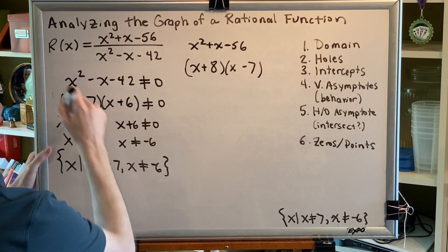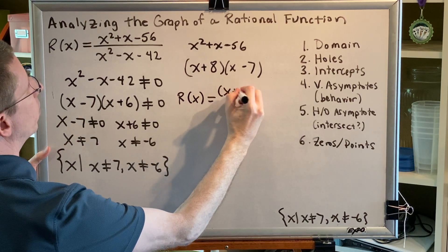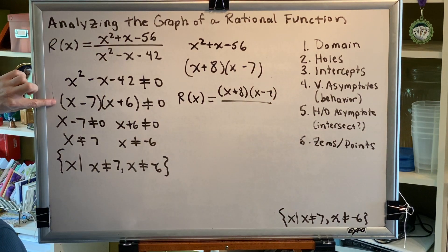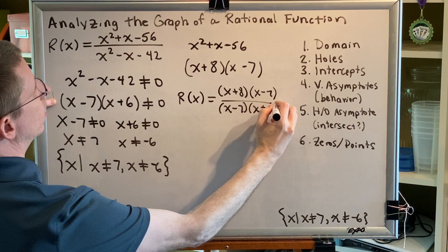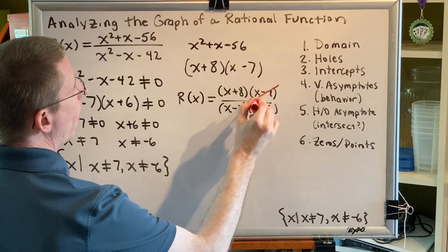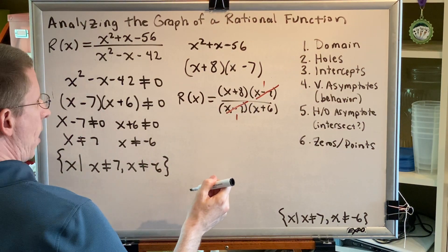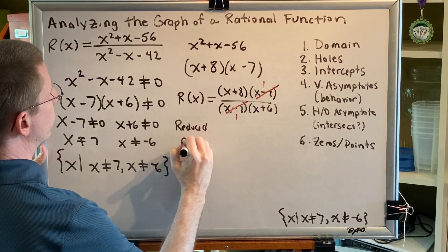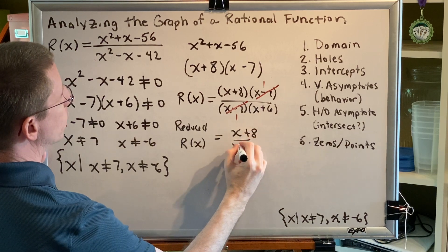This allows us to now write our r of x function in factored form. Our numerator is x plus 8 times x minus 7. Our denominator comes from the factors we got in step one, x minus 7 times x plus 6. We notice that we have the ability to reduce by canceling out each x minus 7. They turn into the number 1 and since anything times 1 is itself, we get that our reduced r of x is equal to x plus 8 over x plus 6.